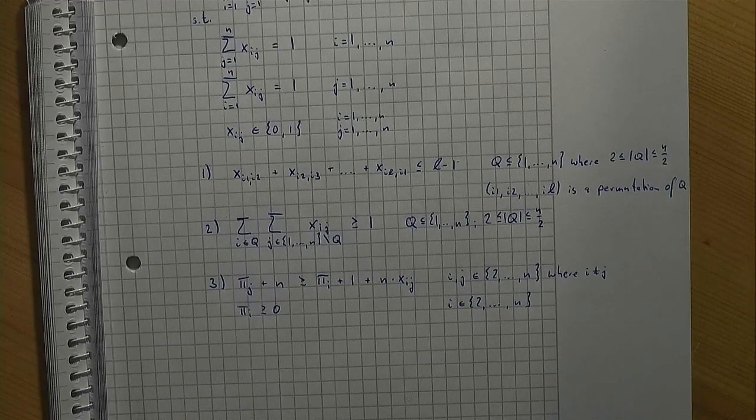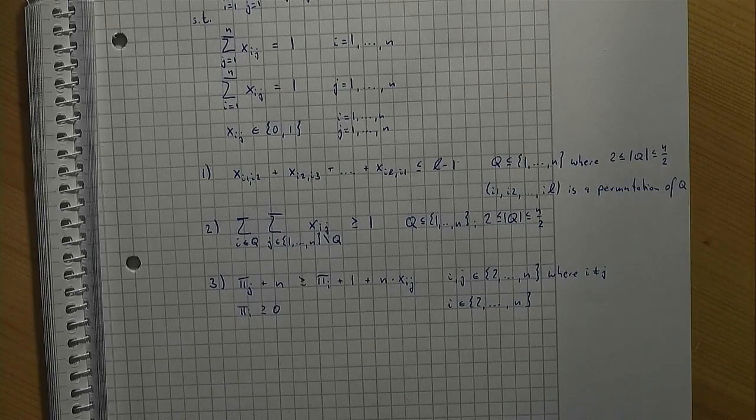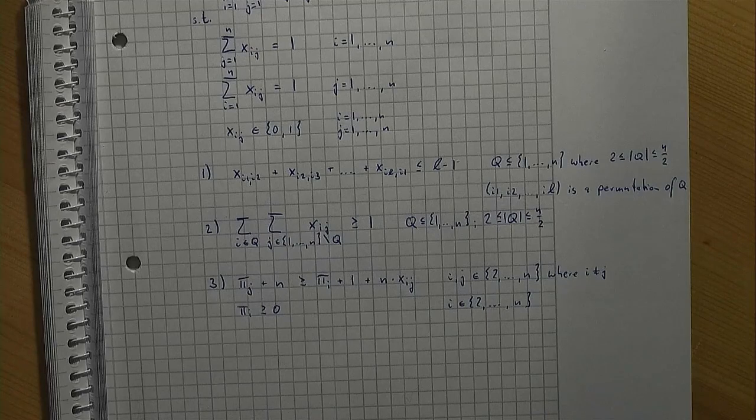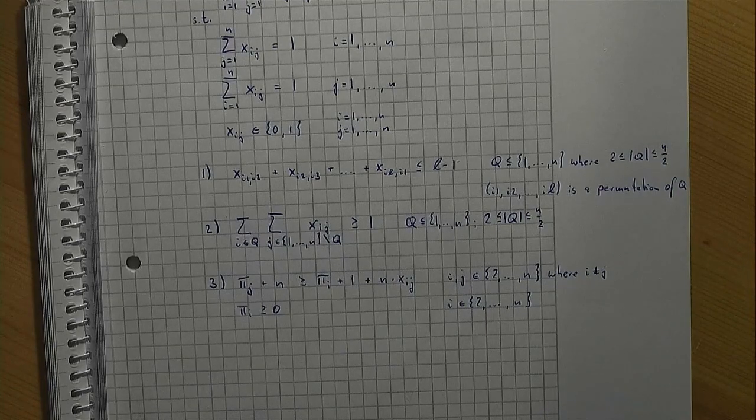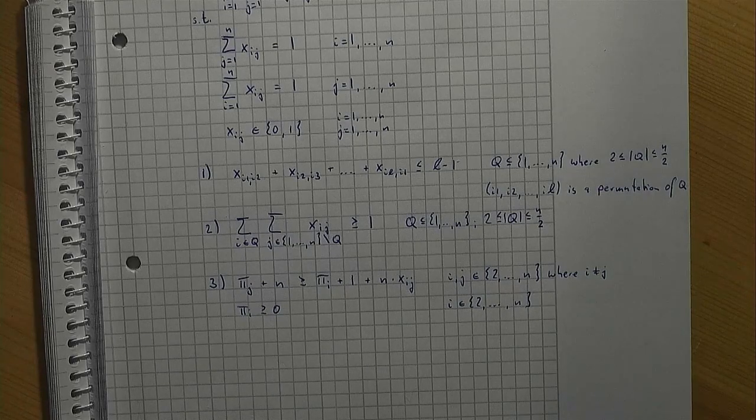In summary, we have seen three different modeling approaches to avoid short cycles in a routing context. One drawback of all these formulations is that the number of constraints gets pretty large if n, the number of locations under consideration, grows.